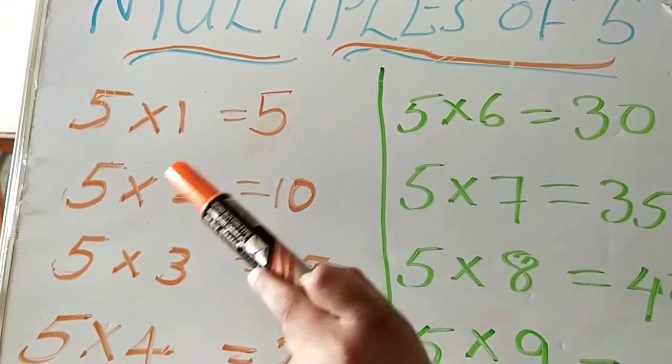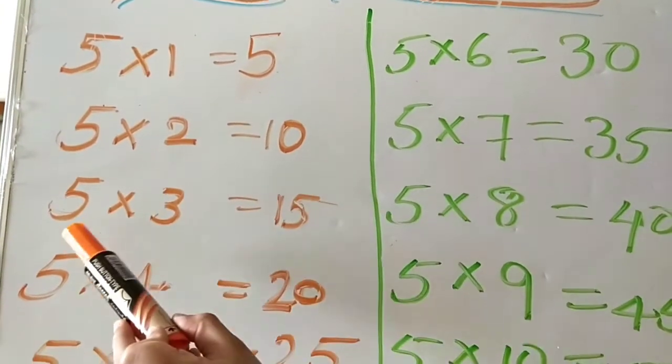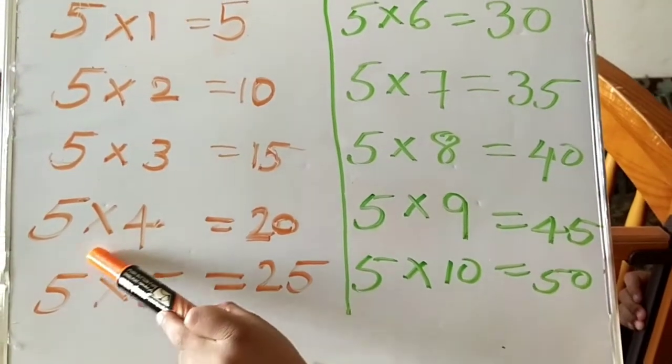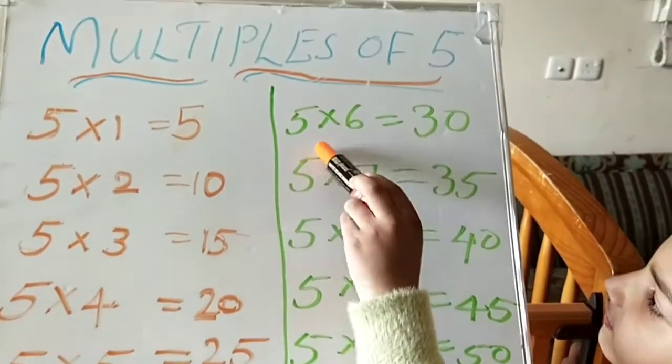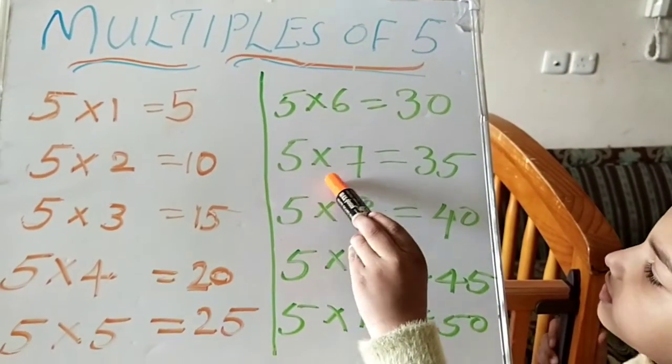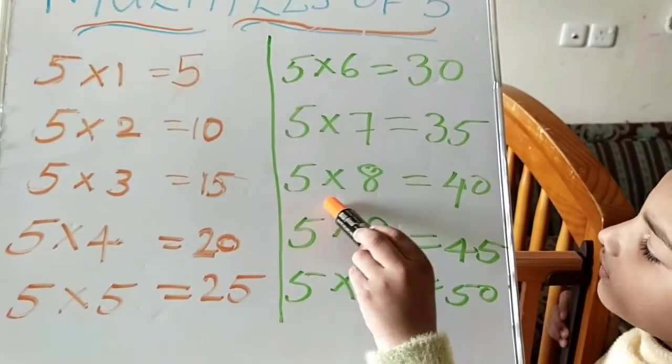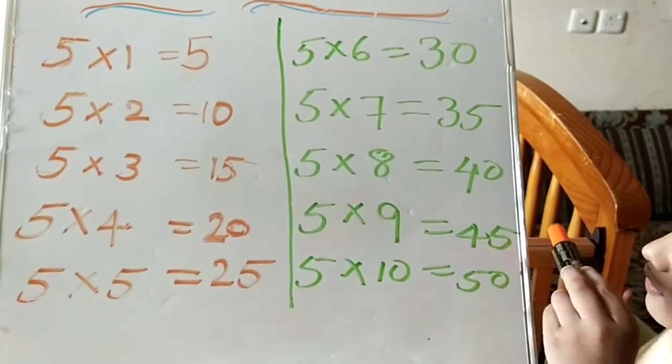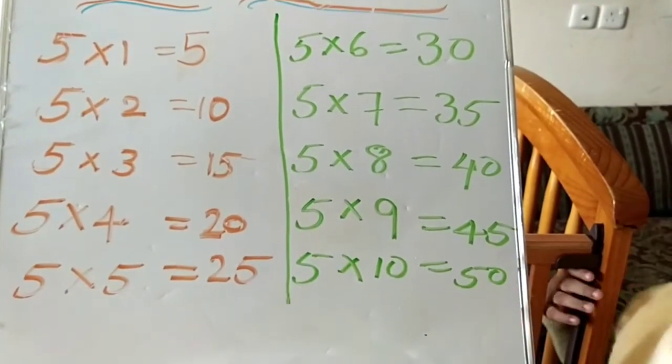5 1s are 5, 5 2s are 10, 5 3s are 15, 5 4s are 20, 5 5s are 25, 5 6s are 30, 5 7s are 35, 5 8s are 40, 5 9s are 45, 5 10s are 50.